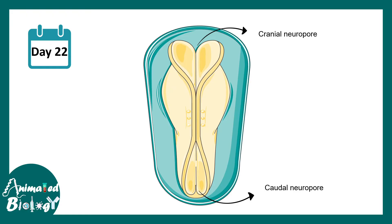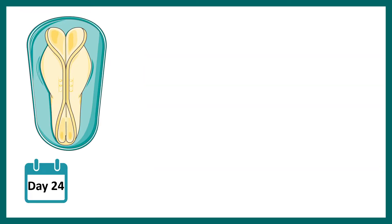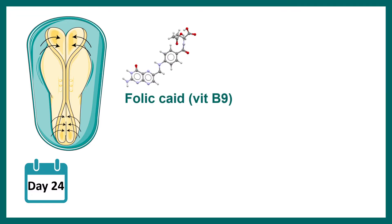Eventually, in order to form the tube, these two portions need to be closed properly. At around day 24, the cranial neuropore should be closing. In this closing procedure, there are nutrients which are super important, such as folic acid, or vitamin B9. Without vitamin B9, this closure cannot happen, and that is why folic acid deficiency is detrimental.